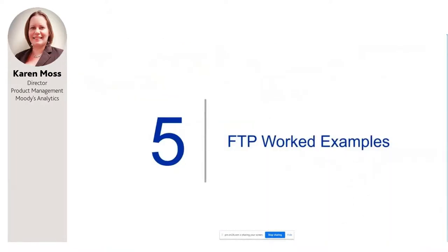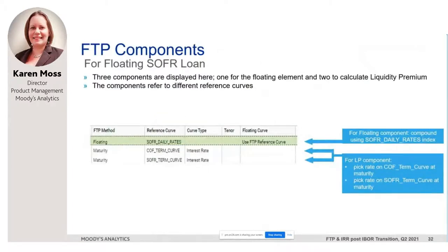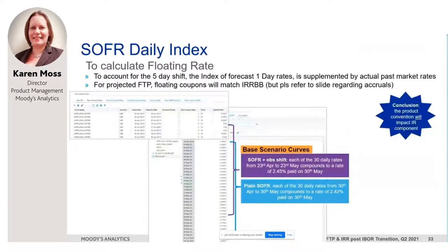Now let's move on to a worked example for FTP using the same two loans. Funds transfer pricing rates consist of components, and I want to show the impact that these ARR conventions will have on those components. My worked example includes three components: one to calculate the floating rate element of the FTP rate, and two to calculate a liquidity premium. The floating interest rate element will use the compounded one-day rates from the daily rates index. Similar to the previous worked example, the lag loan will have a slightly different rate for every coupon versus the plain SOFR loan because it's compounding a slightly different set of rates.